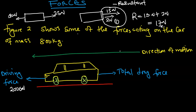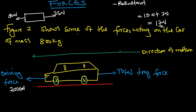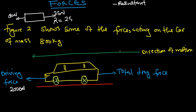Now, if you are given forces acting in the opposite direction, you subtract the forces to find the resultant force. So you are going to say 25 Newton minus 10 Newton, and the resultant force is therefore 15 Newton. Just find the difference of the two forces. I hope you've learned something here about the resultant force.